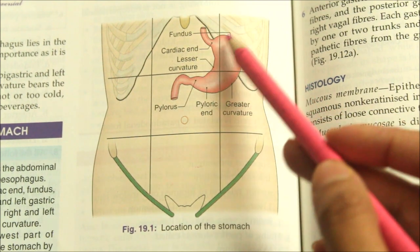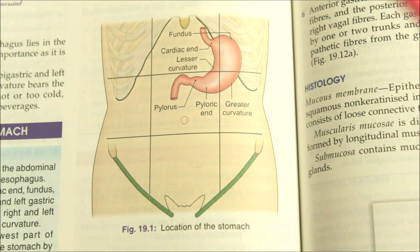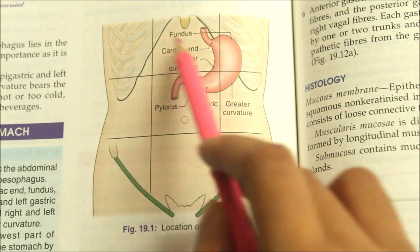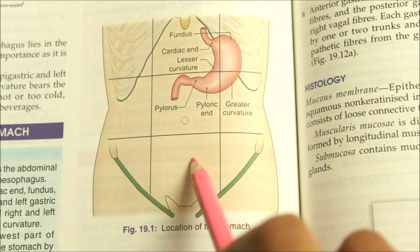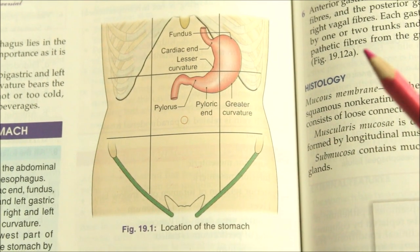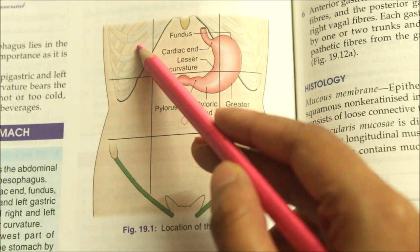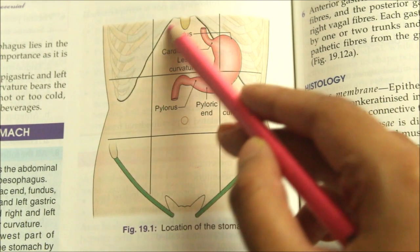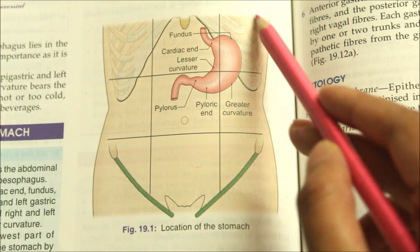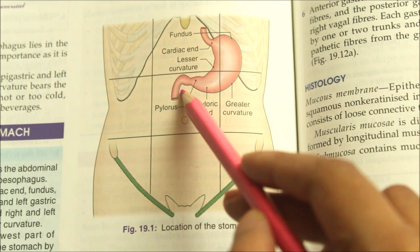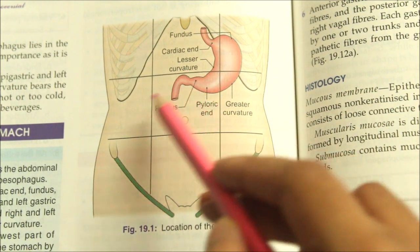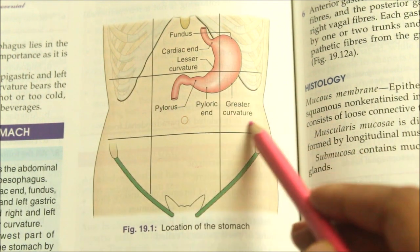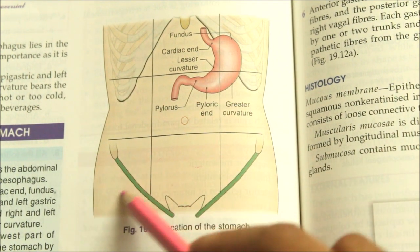The abdomen is divided into nine regions: the right hypochondrium, the epigastrium, the left hypochondrium, the umbilical region, the right lumbar, the left lumbar, the right iliac fossa, the left iliac fossa, and the hypogastrium.